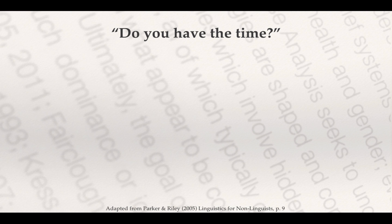Next, somebody might ask you, 'do you have the time?' An appropriate response would be '4:30' — they actually want the time. But if somebody responded 'yes,' that's not an appropriate response. What the person is actually asking is not 'do you have the time,' but 'would you please give me the time?' So the linguistic actual production of language is not matching up with what the actual meaning is supposed to be.